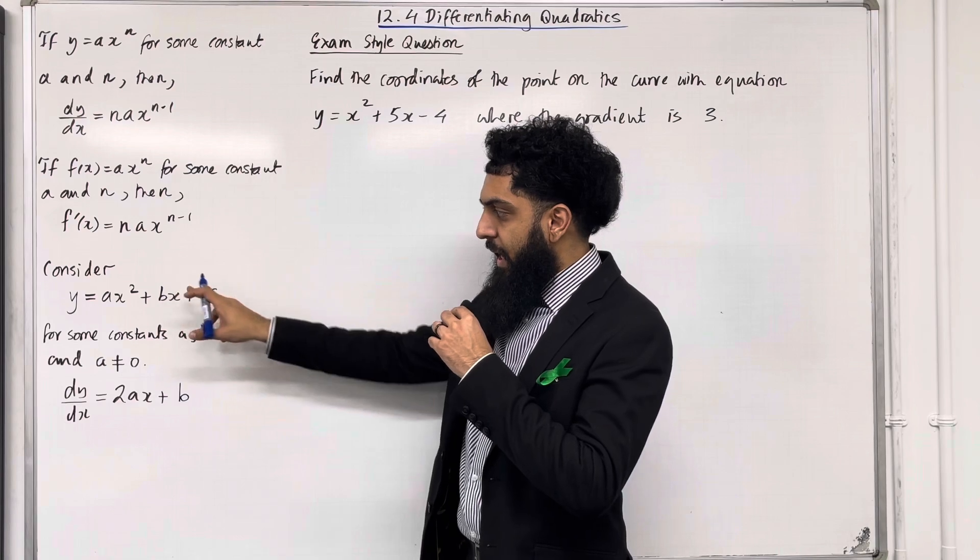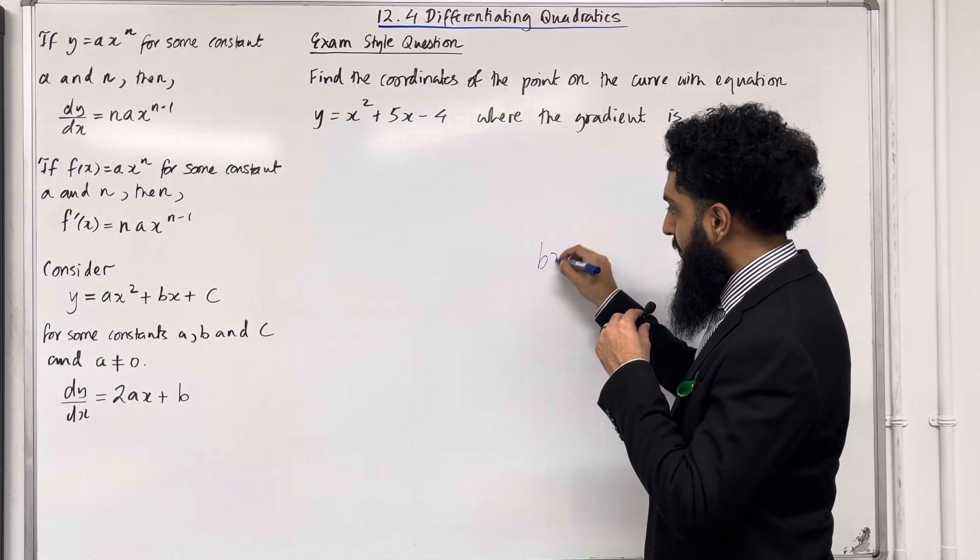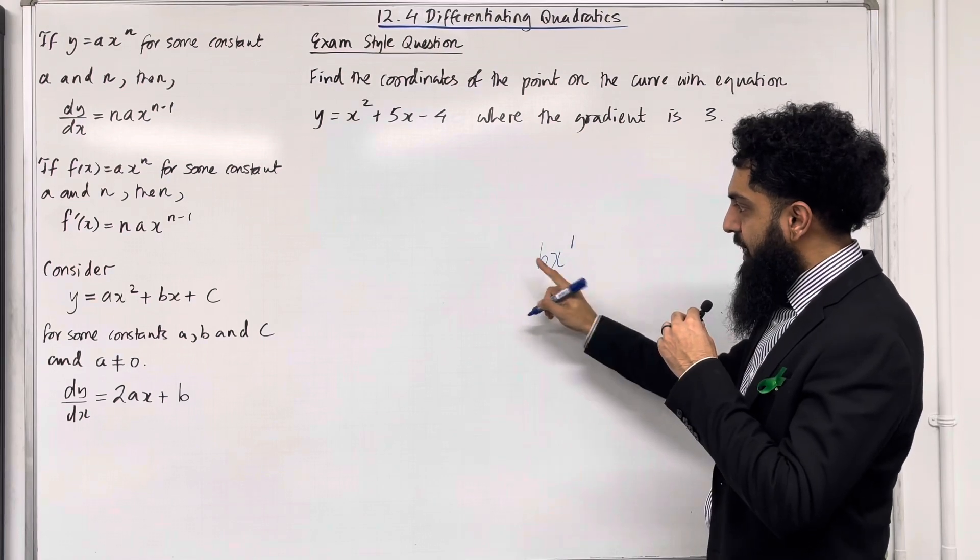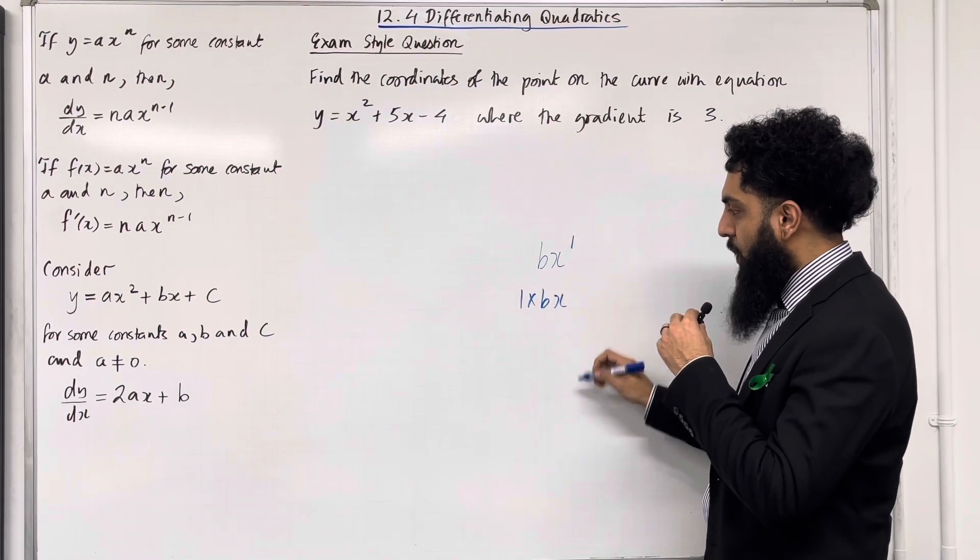When you differentiate bx, that becomes b, because if you've got bx, the power of x is 1. So you can bring down 1. That's 1 times bx to the power 1 take away 1, which is 0.